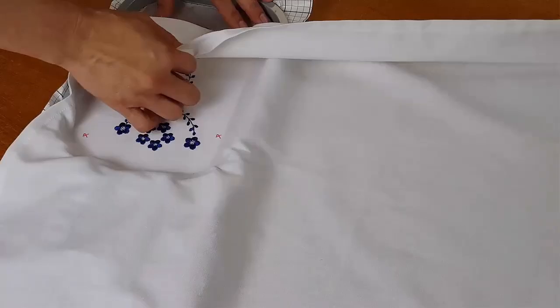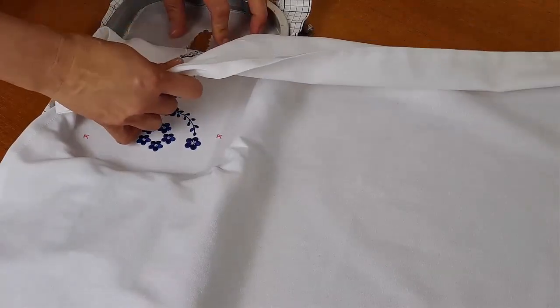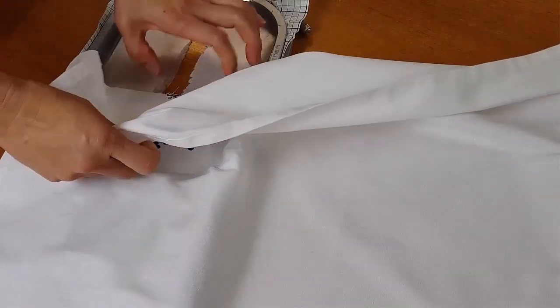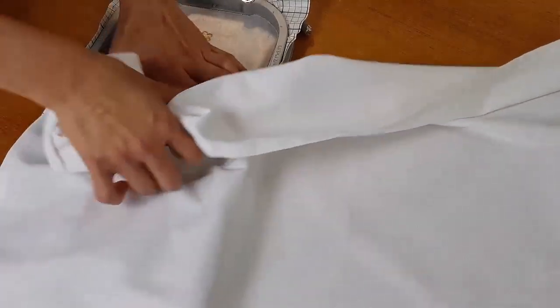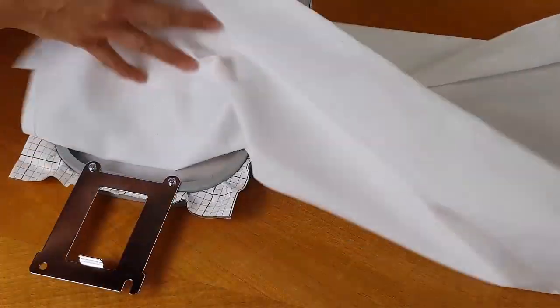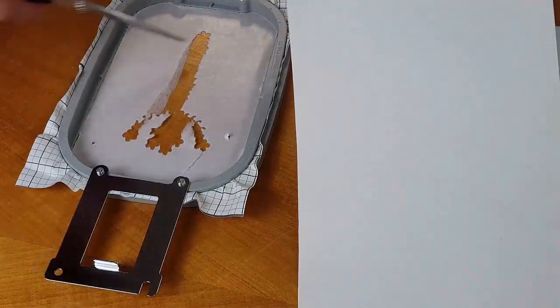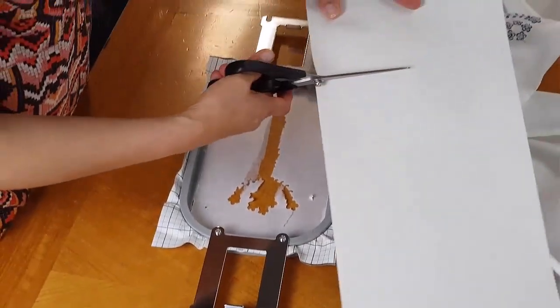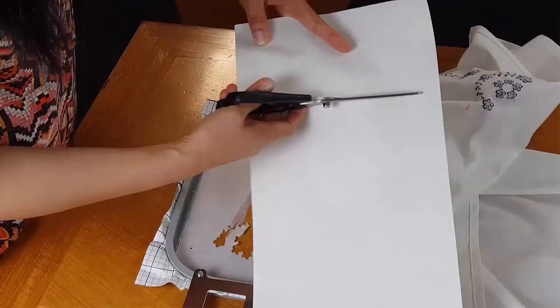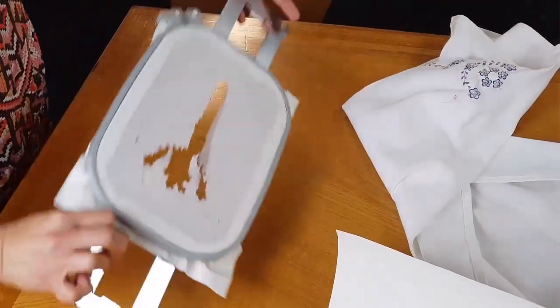Now we can remove the fabric from the backing. Rather than remove the backing altogether, peel off the stitch out only. We can save time and cost by simply cutting another smaller piece to cover the hole left by the first stitch out.